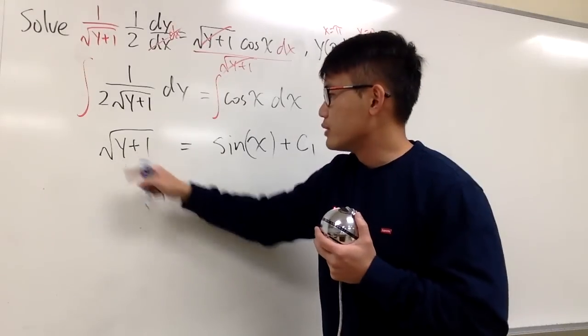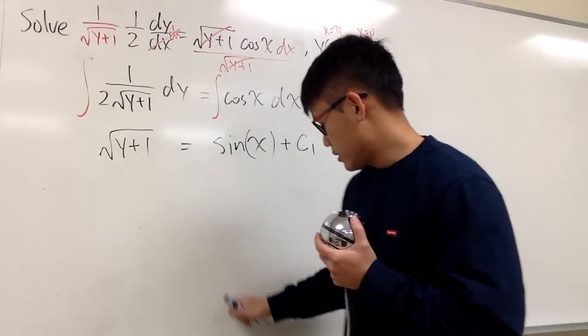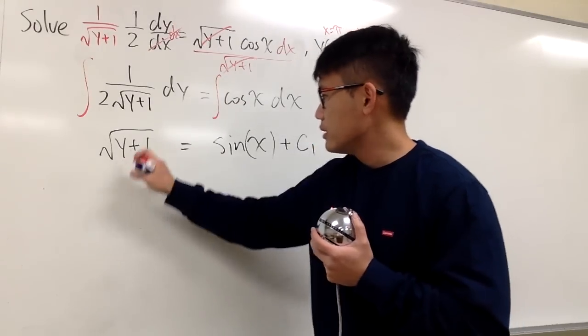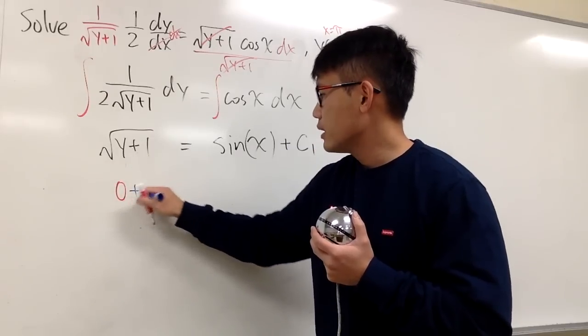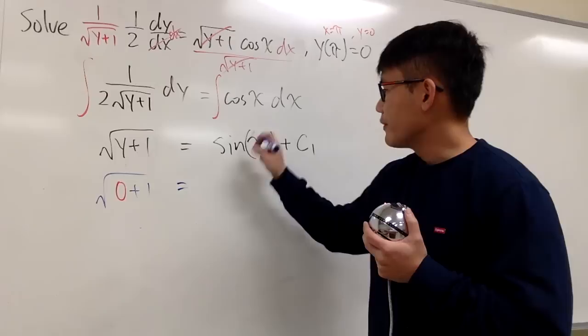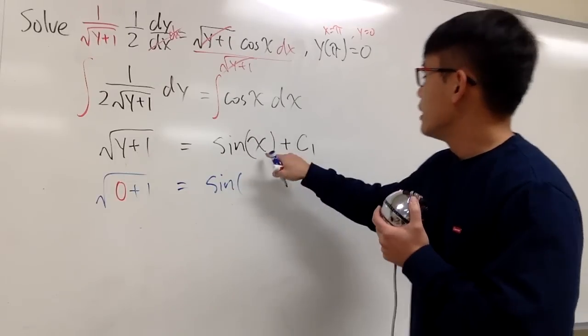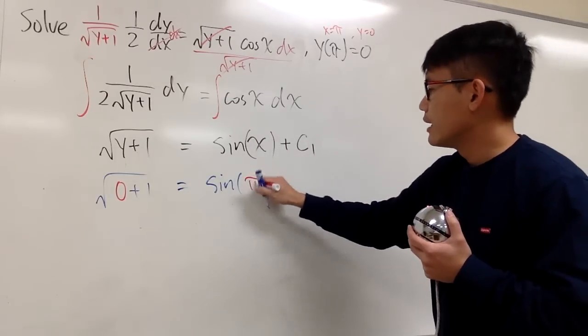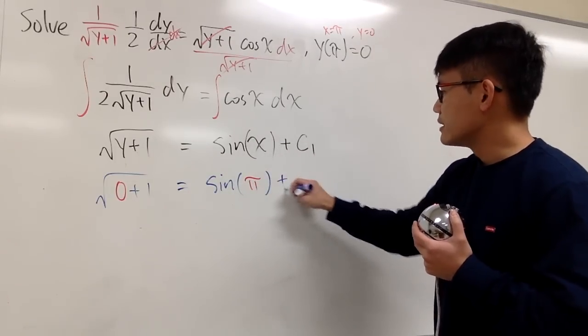Okay, plug in 0 into this y here. We have 0 here, let me get the red color. 0 and then plus 1, and then that's instead of the square root. And this is equal to, we have the sine. x is pi. And we close that, and then we add a c.